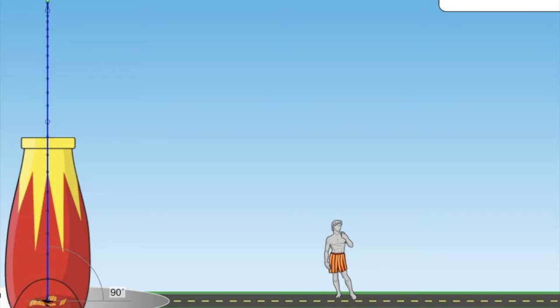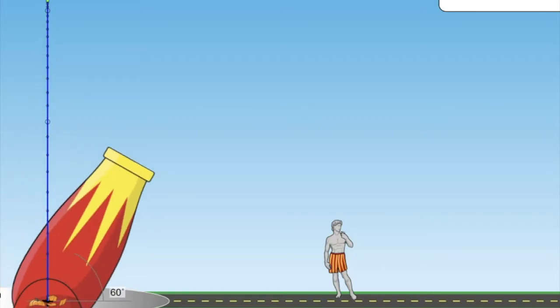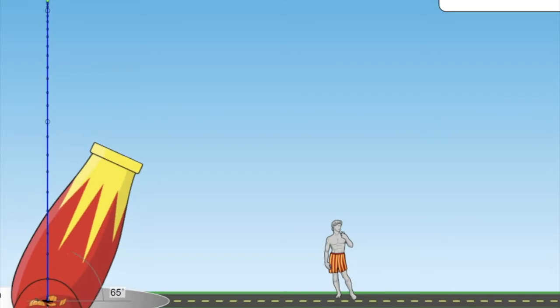Now we incline the cannon at an angle, so we can study the motion of the pumpkin when it is shot with a horizontal component of velocity. Firstly, the only force on the pumpkin as it flies is its weight, which causes it to accelerate vertically downwards.